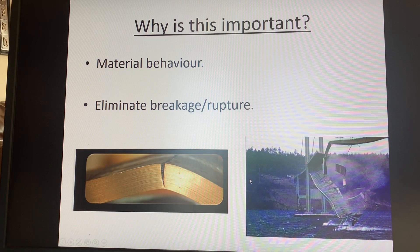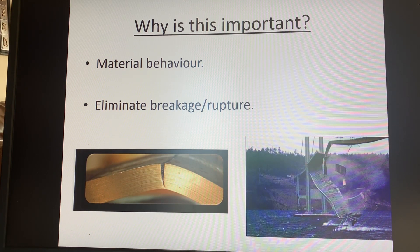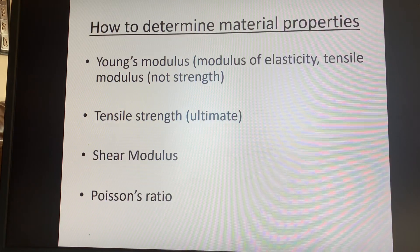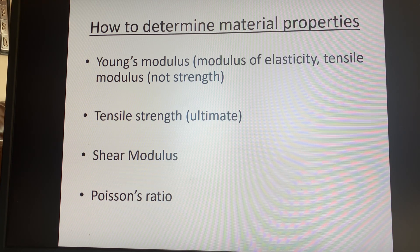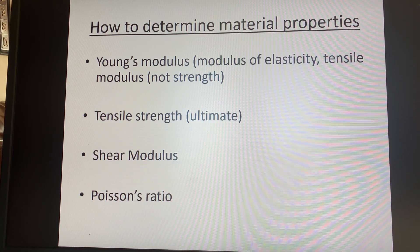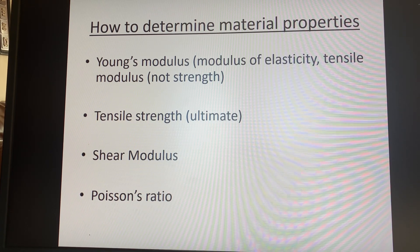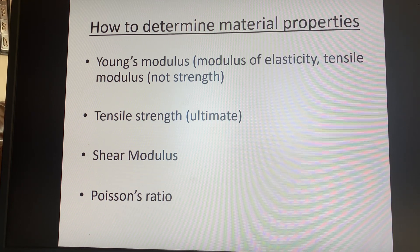Scenarios like this we can try to avoid if we understand how a material will behave. In this video I'll be talking about Young's modulus, which is also known as the modulus of elasticity or the tensile modulus. This is different from the tensile strength, and the tensile strength is also known as the ultimate tensile strength. In subsequent videos I'll also be talking about the shear modulus and Poisson's ratio.